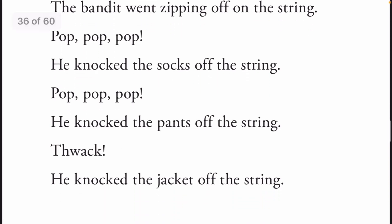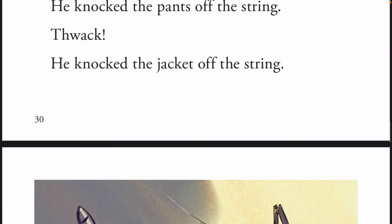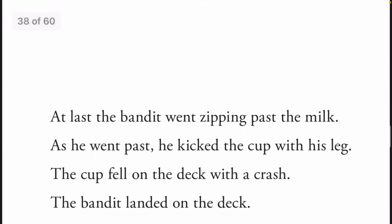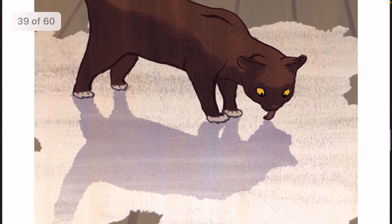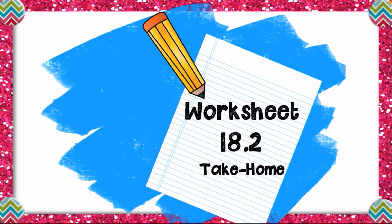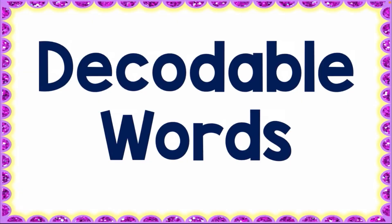The bandit went zipping off on the string — pop pop pop, he knocked the socks off the string; pop pop pop, he knocked the pants off the string; he knocked the jacket off the string. At last the bandit went zipping past the milk. As he went past, he kicked the cup with his leg. The cup fell on the deck with a crash. The bandit landed on the deck — lap, lap, lap, lap — that was the end of the milk! Now open your worksheet 18.2 and complete the activity.